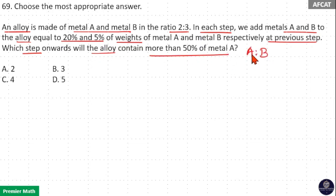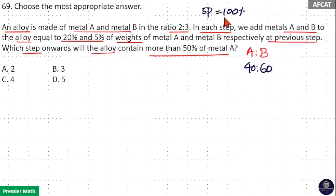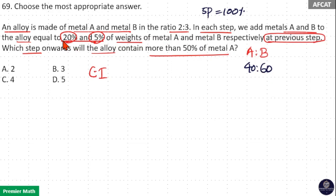A and B in the ratio 2:3 means A is 40% and B is 60%, because 2+3 is 5 parts, 5 parts is 100% so 1 part is 20%. In each step, 20% and 5% of the weights of metals A and B at the previous step is added — which means we are calculating compound interest for the principal 40 and 60 at the rates of 20% and 5%.